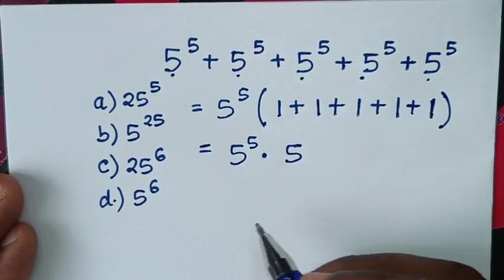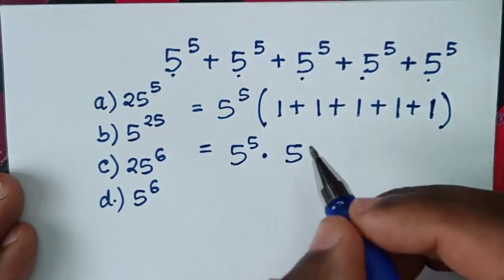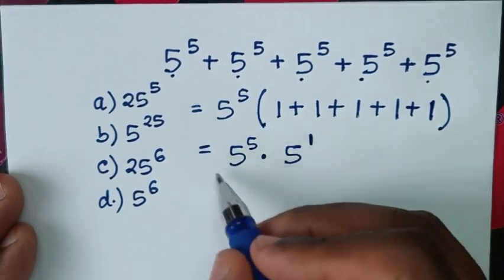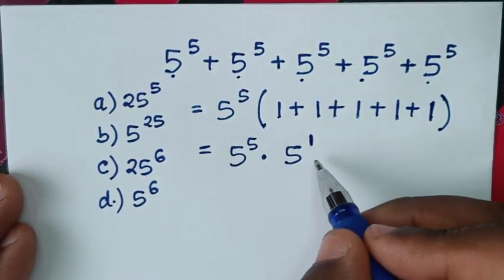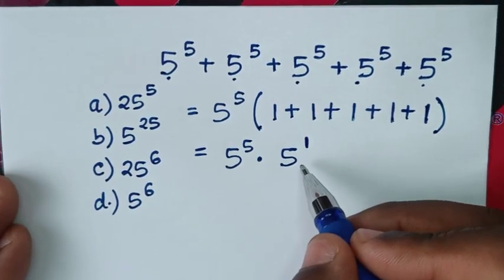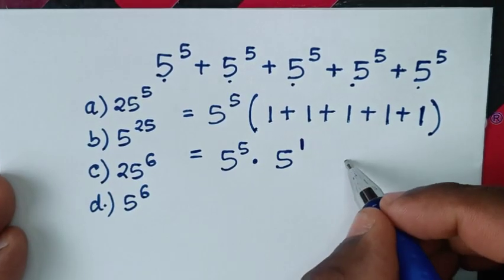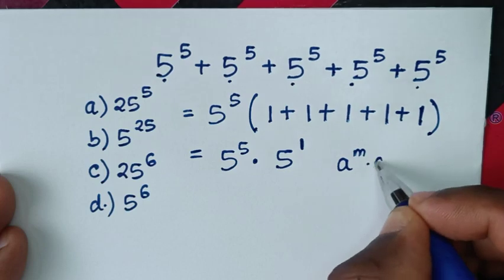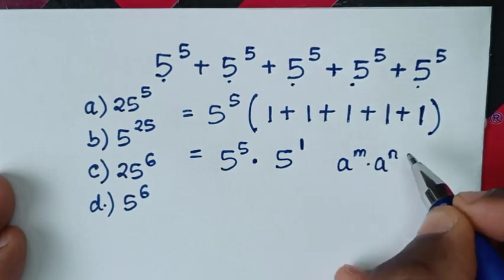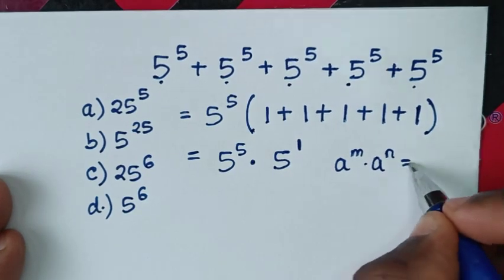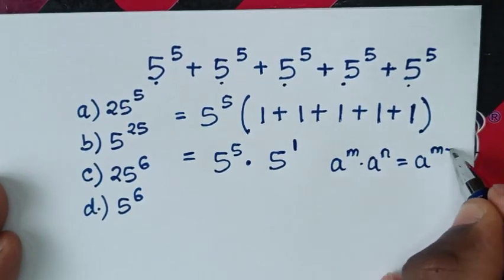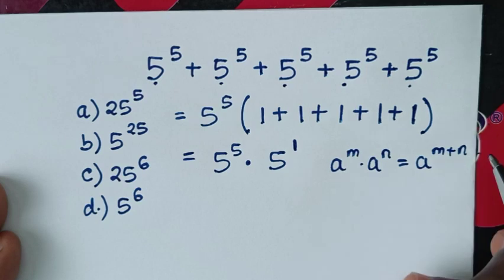Then here 5 is the same as 5 power of 1. Now this is in the form of the exponential rule, which is a power of m times a power of n, which is equal to a power of m plus n.